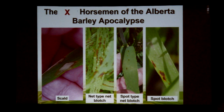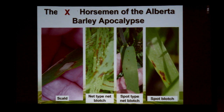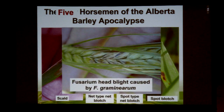Unfortunately over the last five to eight years we see a fifth horseman of the barley apocalypse, which is a real concern in terms of the malting barley industry and feed industries if you're targeting monogastrics — and that's fusarium head blight.